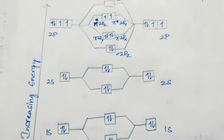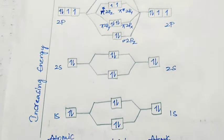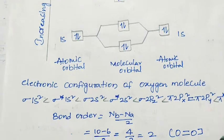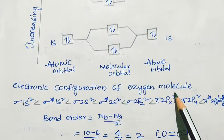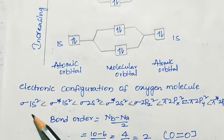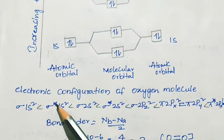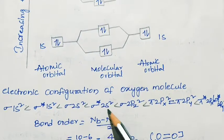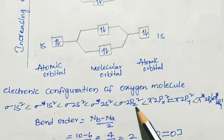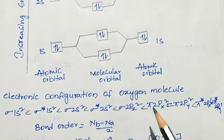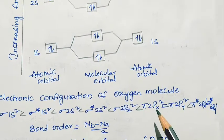Now we will calculate the bond order for the oxygen molecule. The electronic configuration of O2 is: σ1s², σ*1s², σ2s², σ*2s², σ2pz², π2px².